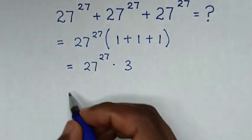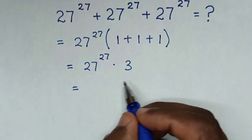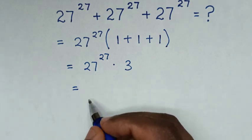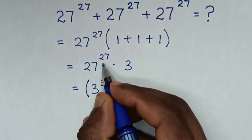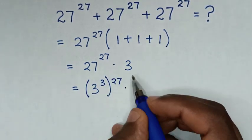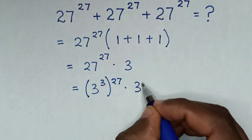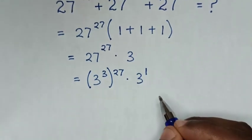Then it will be equal to... For this 27, to have the same base of 3, 27 is the same as 3 to the power of 3, then bracket to the power of 27, then times 3 is the same as 3 to the power of 1.